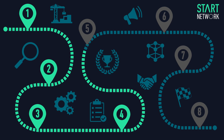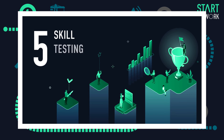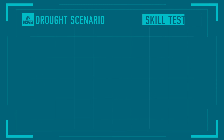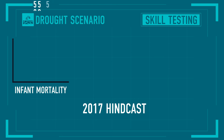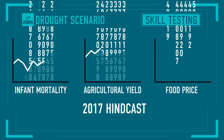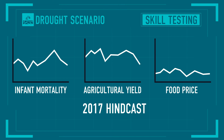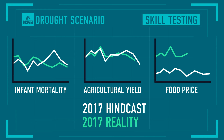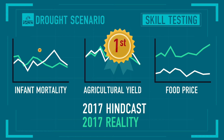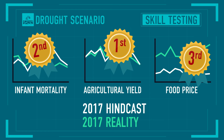Checkpoint 5: skill testing uses known data from past events and inputs it into each model to see how well the results match what actually happened. This indicates a level of skill for each of the datasets and suggests how well they are likely to perform in the future.